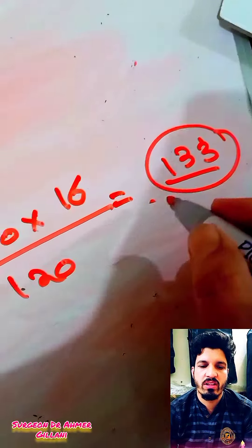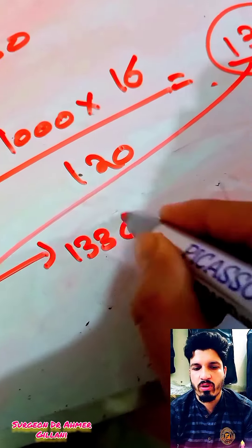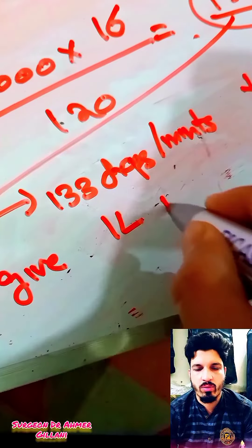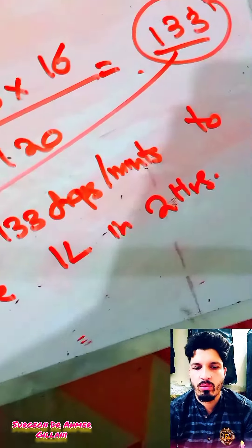So you have to give 133 drops per minute to give fluid accordingly, one liter in two hours.